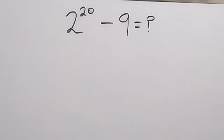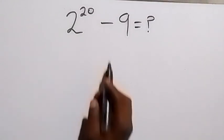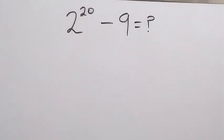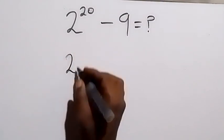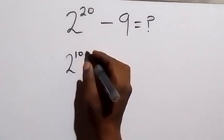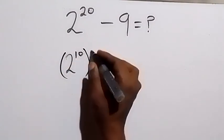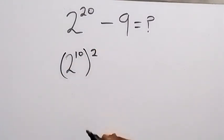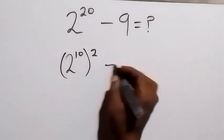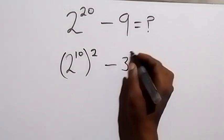Hello, you are welcome. How to solve this problem: 2 raised to power 20 minus 9. Let's rewrite this as 2 raised to power 10, then raised to power 2. From the law of indices, these multiply to give 10, still the same as 2 raised to power 20. Then let's write 9 as 3 squared as well.